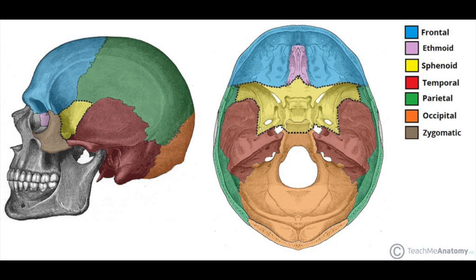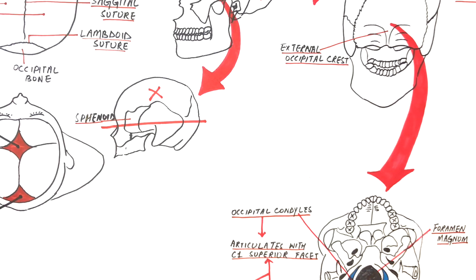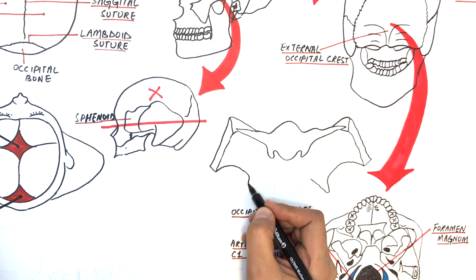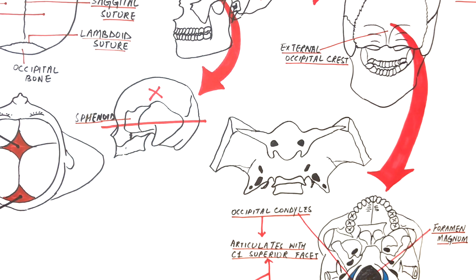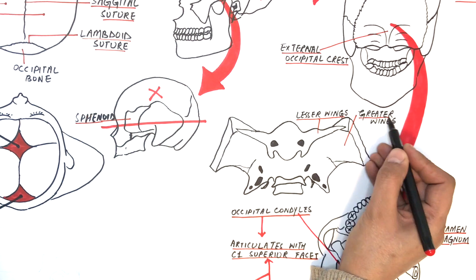Let's pick up this bone from the skull base and talk about some important features of it. As we can see here, the sphenoid bone is a butterfly-shaped bone having two greater wings and two lesser or smaller wings.